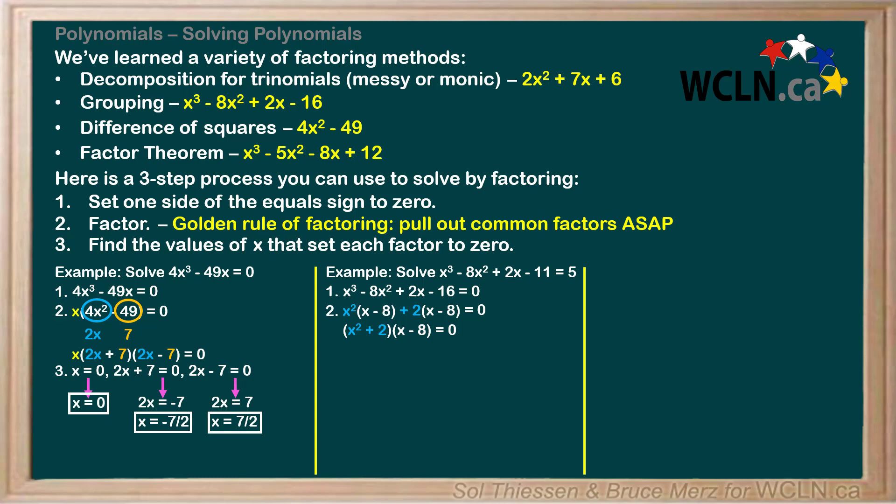Now that the expression is factored, we can move on to step 3 and find the values of x that set each factor to 0. Let's write each factor equal to 0 on its own, and then examine them individually to isolate x. Looking at the factor of x² + 2, to isolate x we have to subtract 2 from both sides. This gives us x² = -2. Then taking the square root of both sides gives us x = ±√(-2). Don't forget the plus or minus, since we took the square root. Do you notice any issue here?